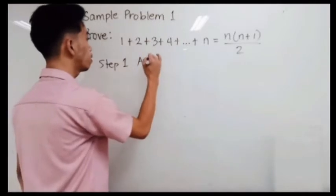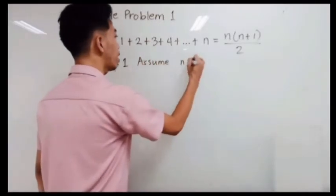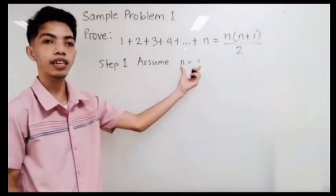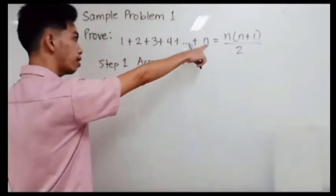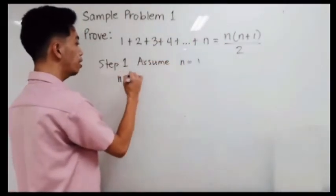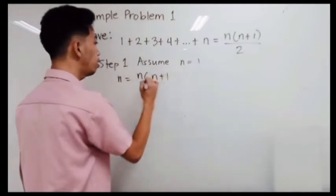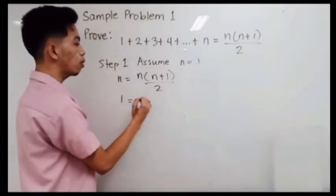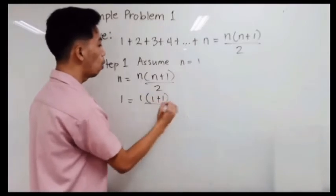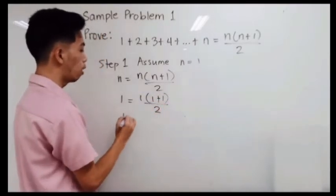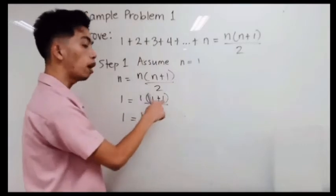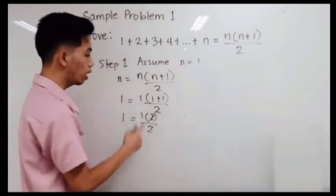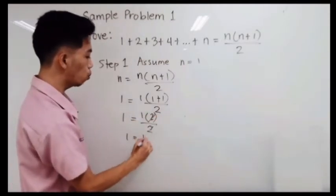Assume that n is equal to 1. So we have n equals n times n plus 1 all over 2. Substitute 1 for n, so we have 1 is equal to 1 times 1 plus 1 all over 2. That gives us 1 times 2 all over 2, and the common factor cancels, so that is 1 is equal to 1.